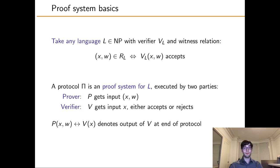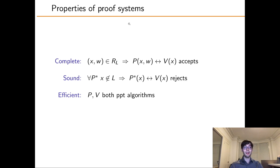All the proofs we present are two-party protocols between a prover and a verifier. Both parties get the instance X as input, and the prover gets a witness Y. At the end of the protocol, the honest verifier either accepts or rejects. Like any proof system, we want these to be complete, sound, and efficient.